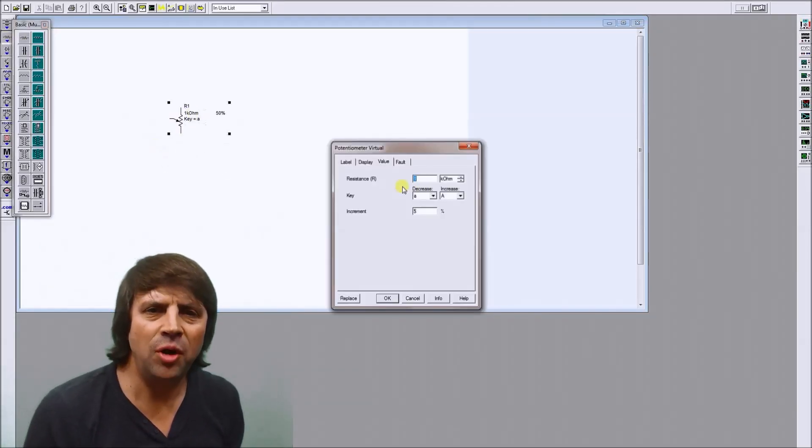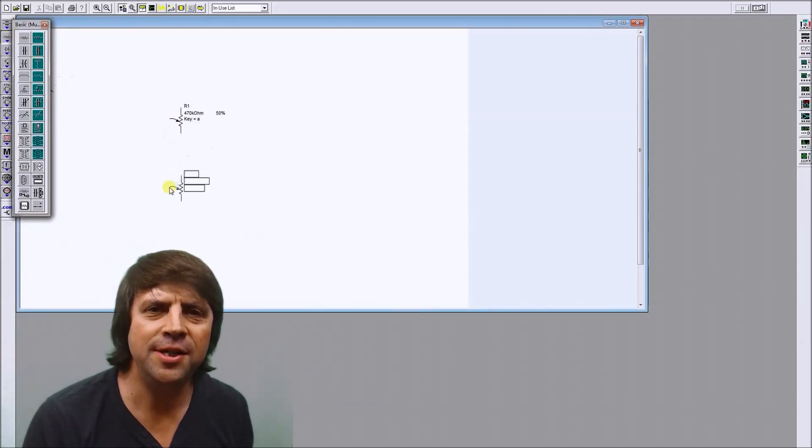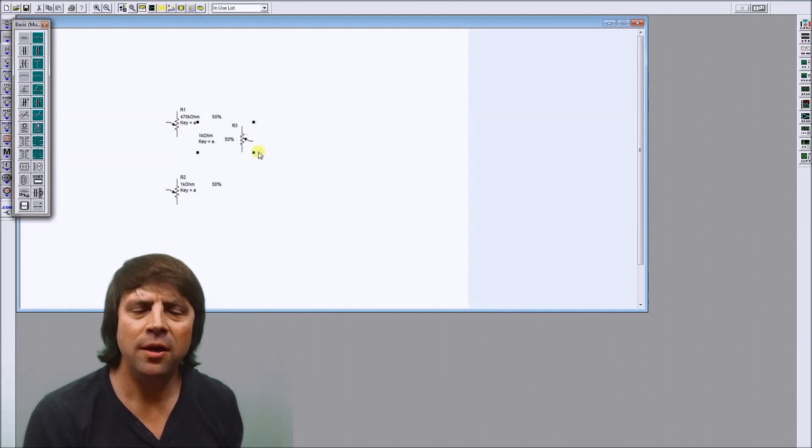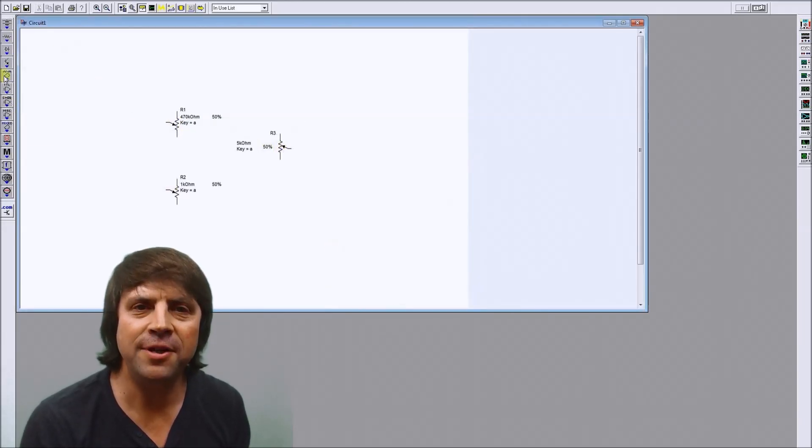And we can use this property to make a simple electronic circuit using a component known as a comparator.